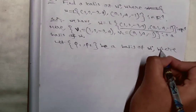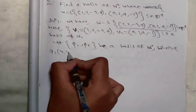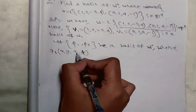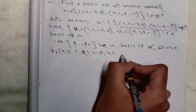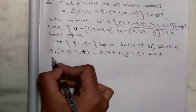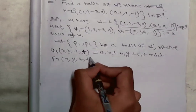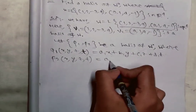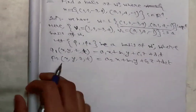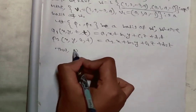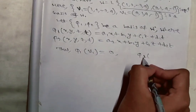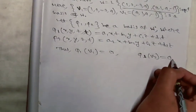We define functionals on R⁴ with basis {x, y, z, t}. So φ₁(x,y,z,t) = a₁x + b₁y + c₁z + d₁t. Similarly, φ₂(x,y,z,t) = a₂x + b₂y + c₂z + d₂t. Thus φ₁(V₁) = 0 and φ₁(V₂) = 0.